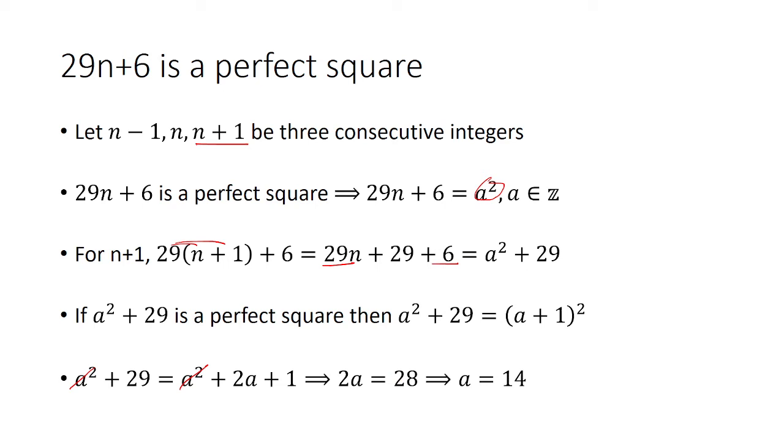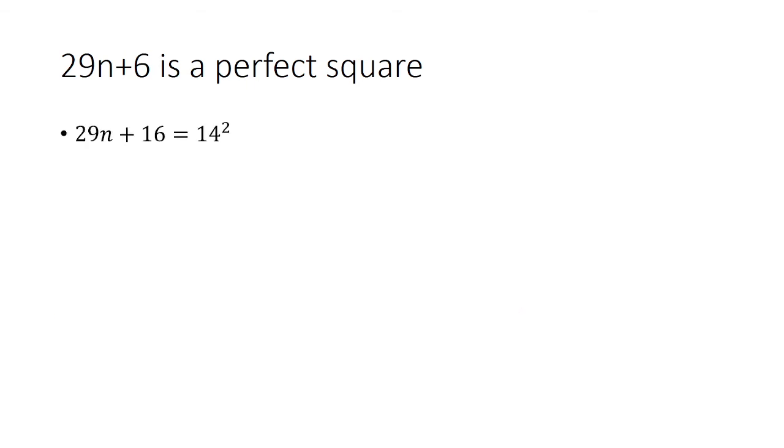Now we plug a = 14 back into the equation. So 29n + 6 = 14², which equals 196. Therefore, 29n = 190, which gives n ≈ 6.6. This is not an integer.